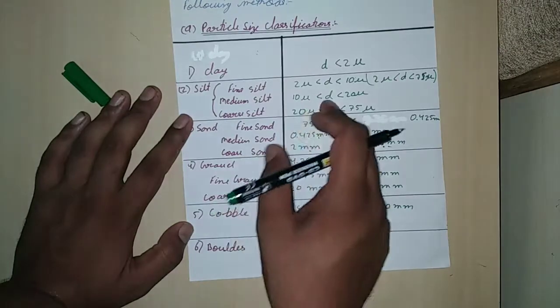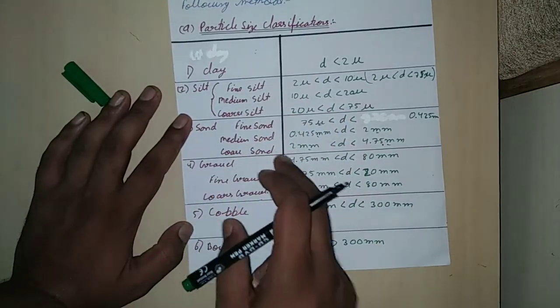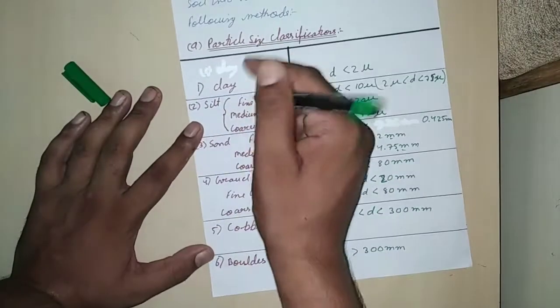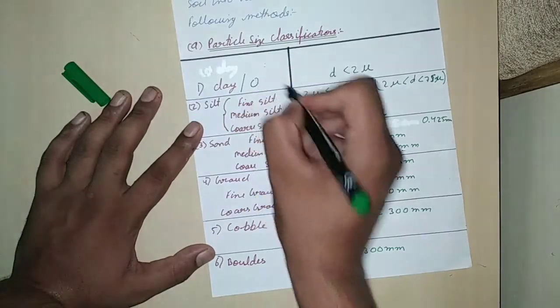We have medium material, coarse material. With clay, there can also be organic material.